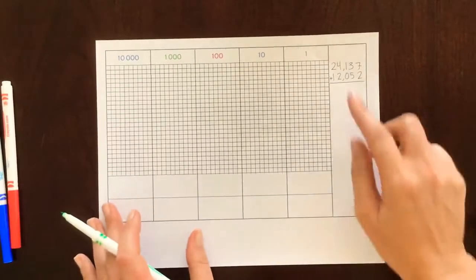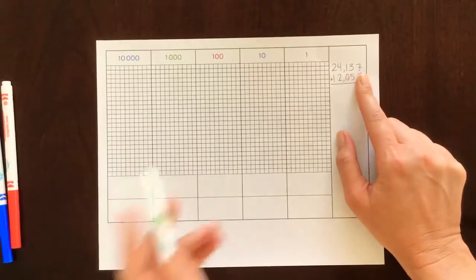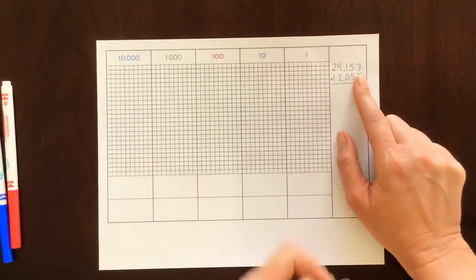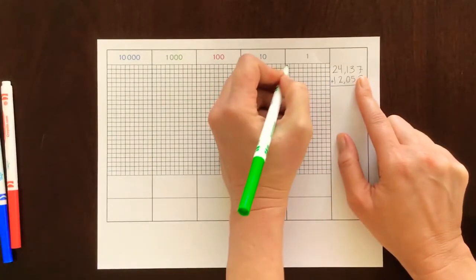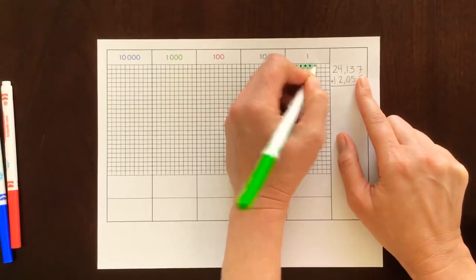We'll start by filling in our first number 24,137. I'm going to start in the ones place and fill in seven dots. One, two, three, four, five, six, seven.